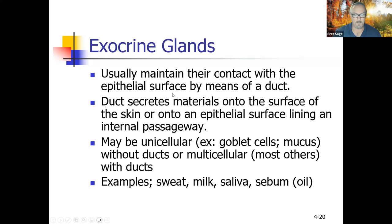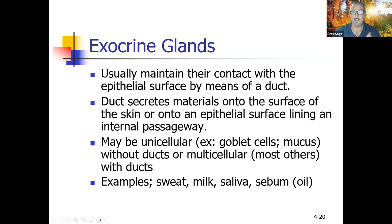Exocrine glands maintain contact with the epithelial surface by means of a duct — a tube leading from the gland to the surface — which secretes materials onto the skin or onto an epithelial surface lining an internal passageway. They can be unicellular, like goblet cells, or multicellular. Examples include sweat, milk (produced to go outside the body to the baby), saliva (the inside of your mouth is physiologically outside your body), and skin oil, scientifically called sebum.